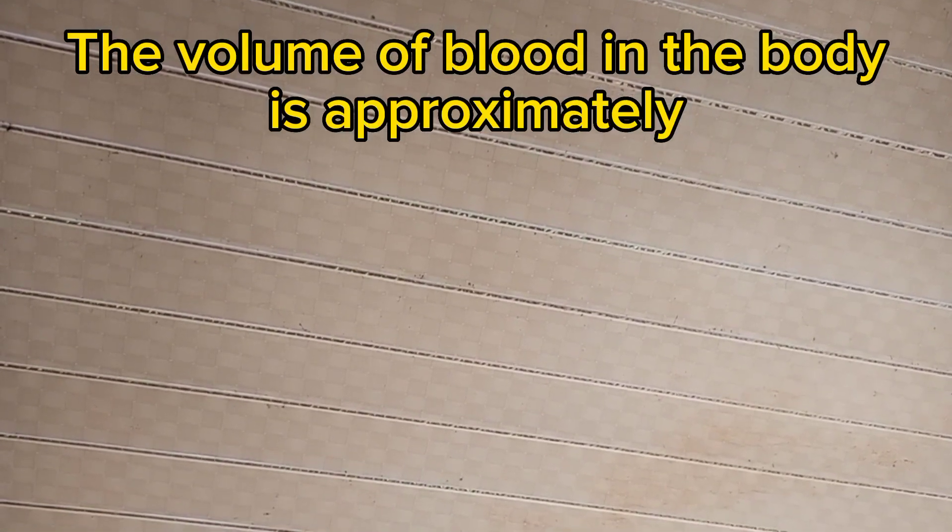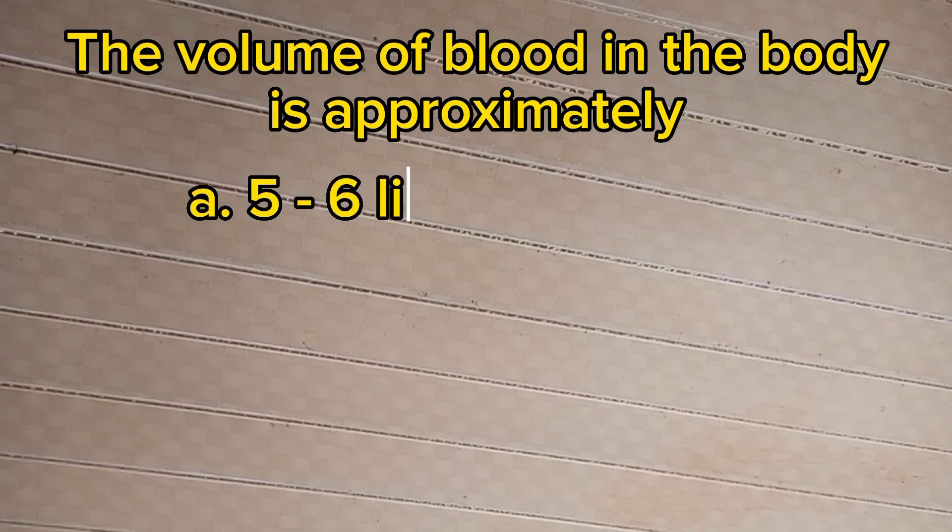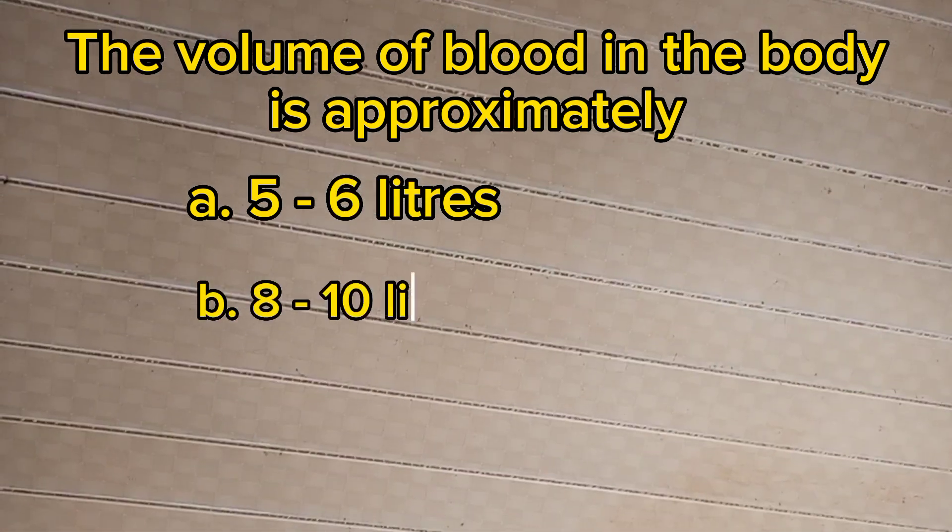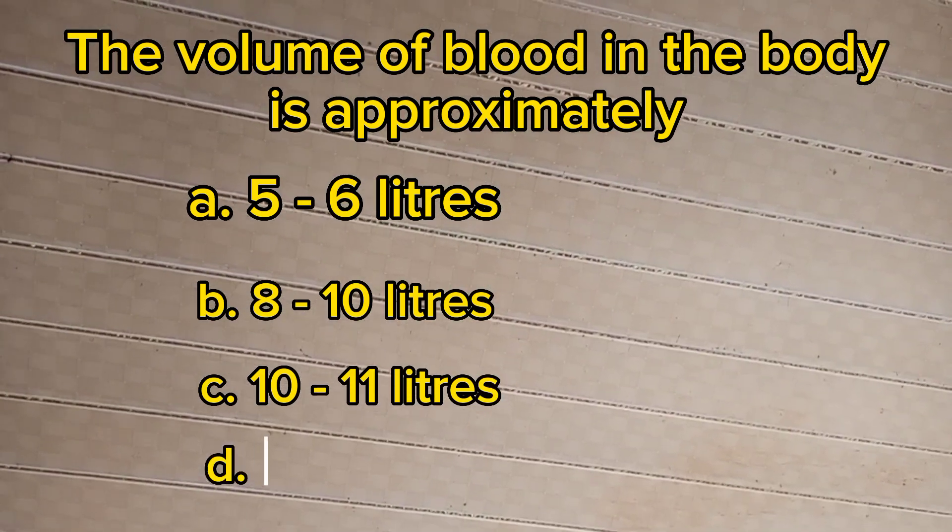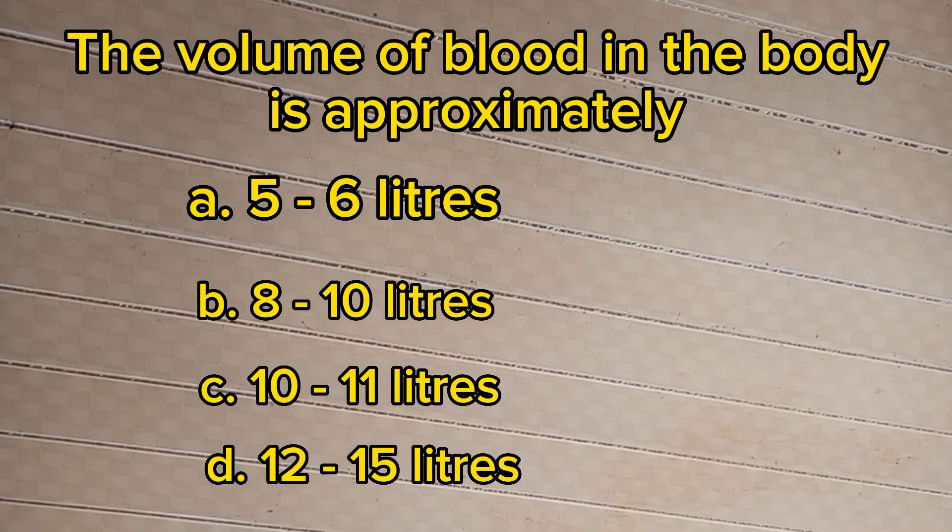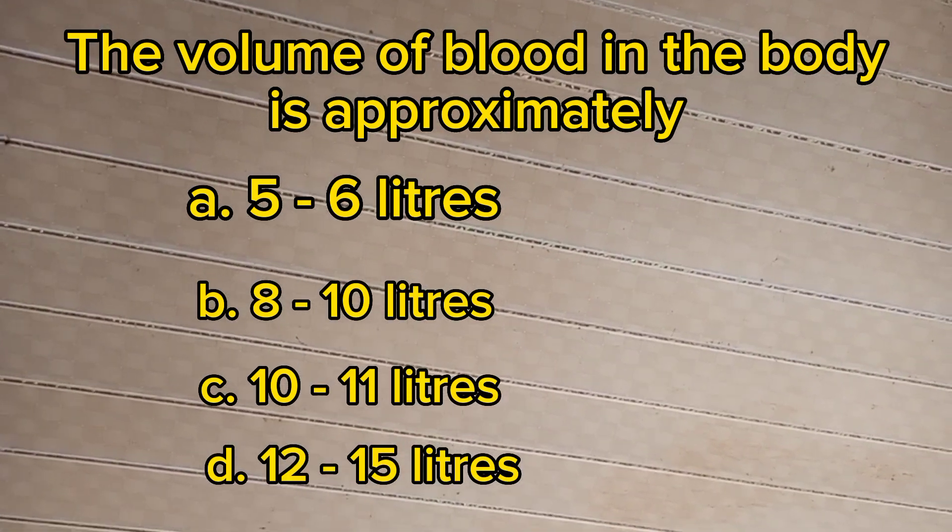Number six: The volume of blood in the body is approximately: A. 5 to 6 liters, B. 8 to 10 liters, C. 10 to 11 liters, D. 12 to 15 liters. The answer is A, 5 to 6 liters.